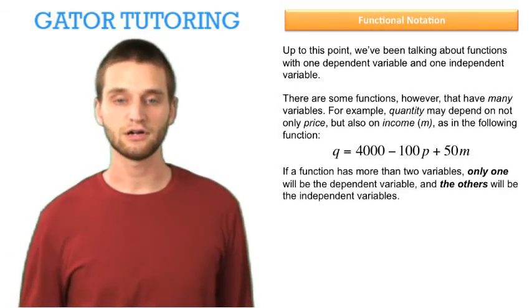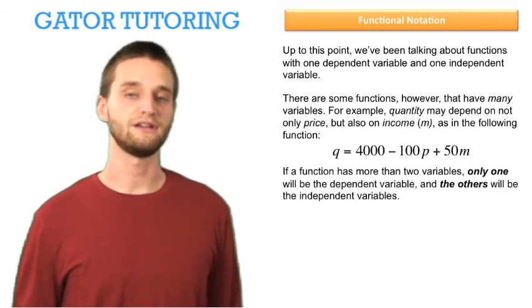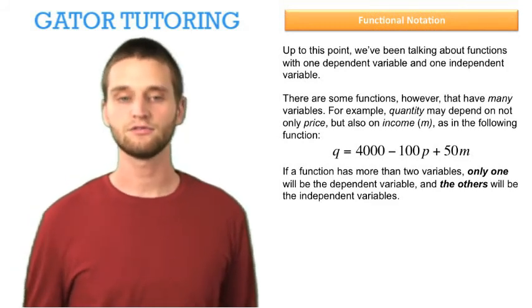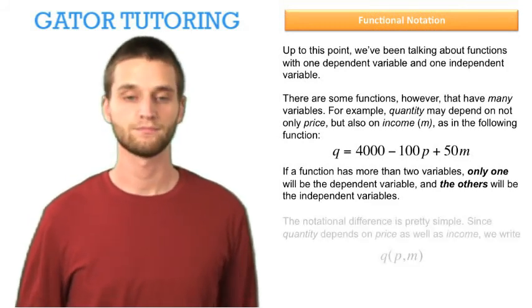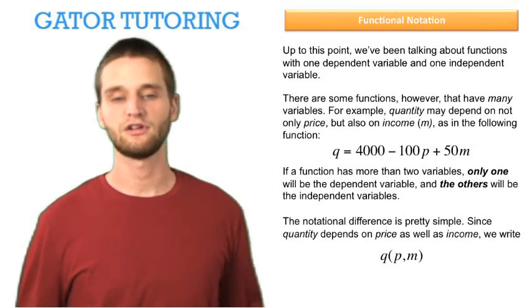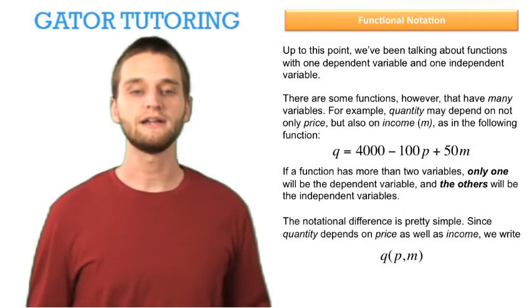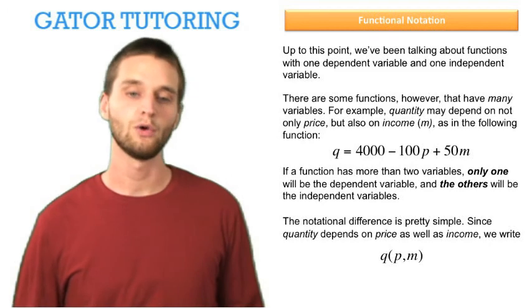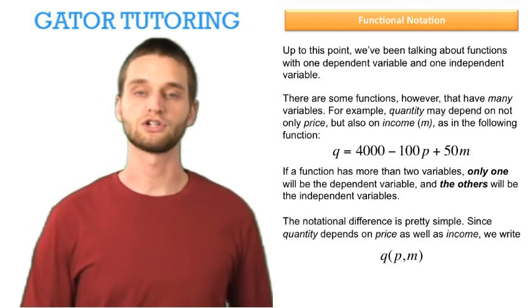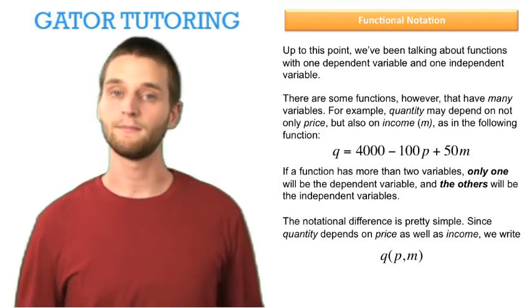If a function has more than two variables, only one will be the dependent variable, and the others will be the independent variables. The notational difference is pretty simple. Since quantity depends on price as well as income, we write Q is a function of P, price, and M, income.